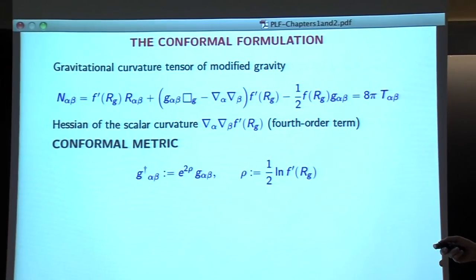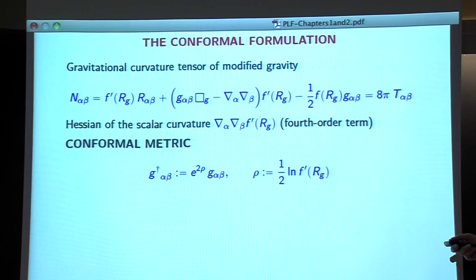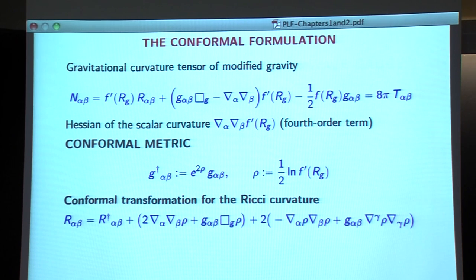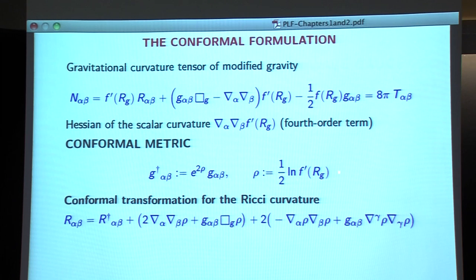Here is a conformal metric. G†_αβ is defined to be e^ρ G_αβ, where the conformal factor is given by f'(R). There is a general formula for the conformal transformation of the Ricci curvature, which is written here. When you see it, you realize there is a good chance of getting some cancellation — especially getting rid of this variation — if you properly choose ρ. The choice made here is precisely done so that this cancellation takes place.